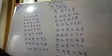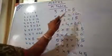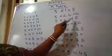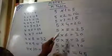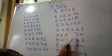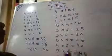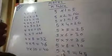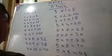Now see the 5's table. 5, 1's are 5. 5, 2's are 10. 5, 3's are 15. 5, 4's are 20. 5, 5's are 25. 5, 6's are 30. 5, 7's are 35. 5, 8's are 40. 5, 9's are 45. 5, 10's are 50.